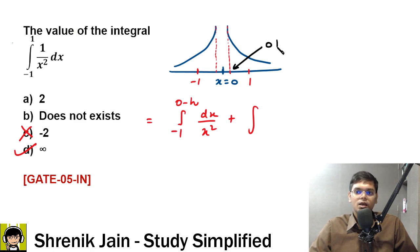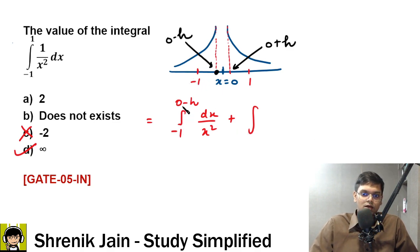This point here, this point is our 0 from one step further, or 0 plus h. This point is our 0 from one step further, 0 minus h. Okay, so -1 to this point which is 0 minus h is written here, and then from this point which is 0 plus h to 1. 0 plus h to 1, dx over x squared. This is my integration.